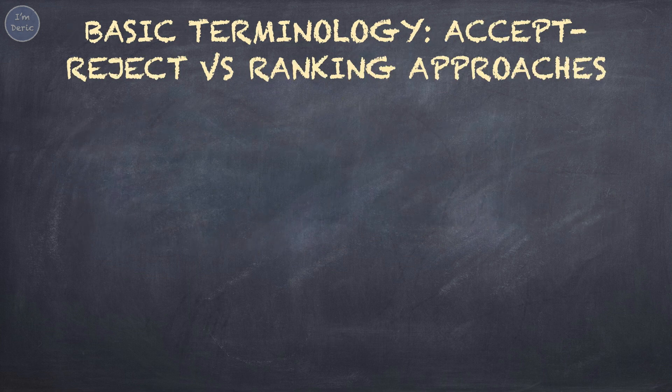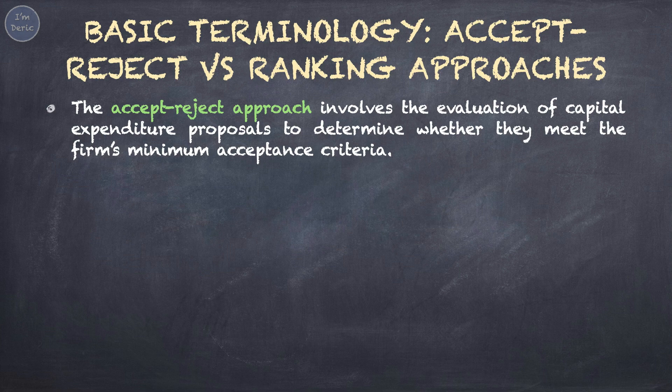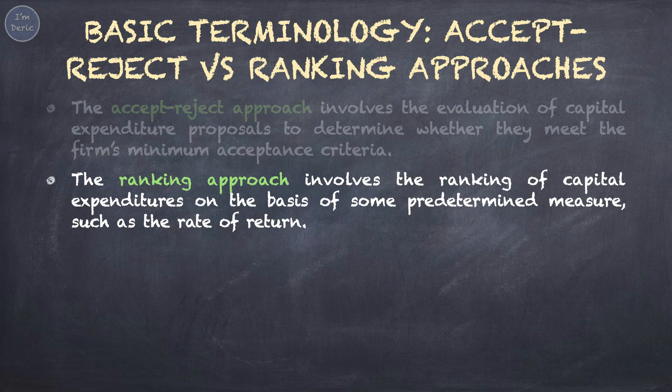Next, the accept-reject approach versus the ranking approach. The accept-reject approach involves the evaluation of capital expenditure proposals to determine whether they meet the firm's minimum acceptance criteria, with projects evaluated one by one separately. However, the ranking approach involves ranking capital expenditures on the basis of some predetermined measure, such as the rate of return, with all projects ranked from the highest return to the lowest.